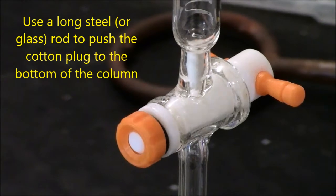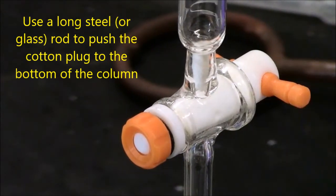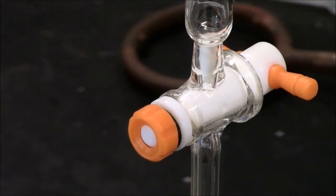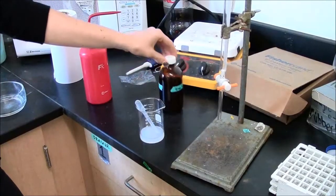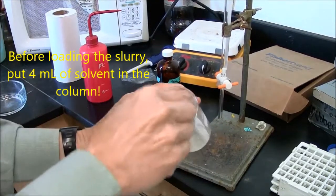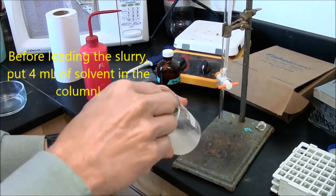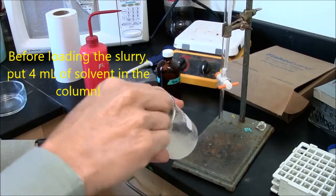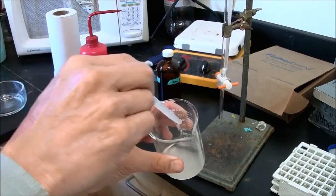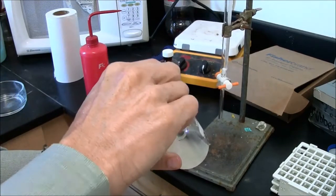Here we have a column. At the base of the column, there's a cotton plug that will keep the silica in the column while allowing solvent to go through. This looks pretty good. It's certainly slushy, not overly fluid. You can pull up silica in your pipette and deliver silica with some solvent as well.